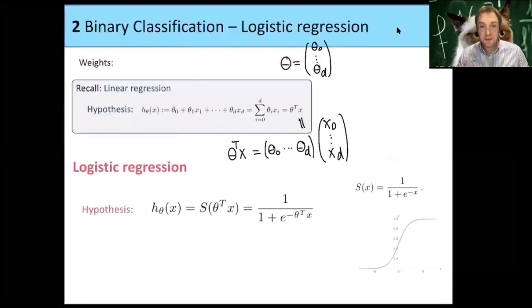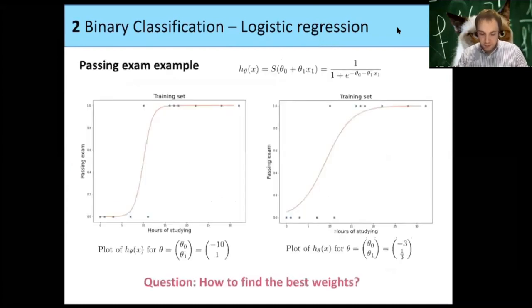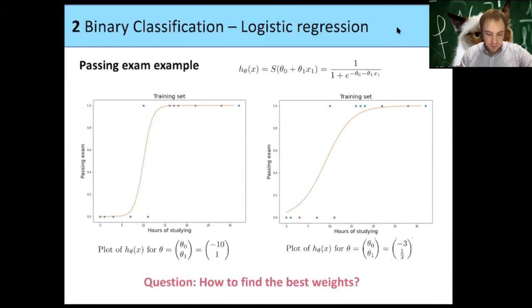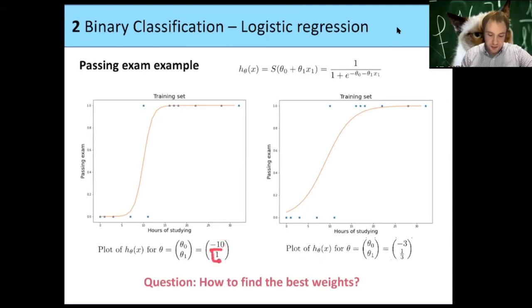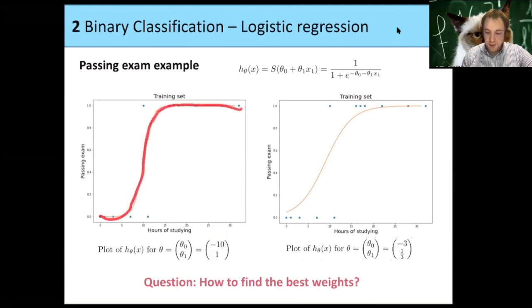The question is, how do we find these weights? For our study example, I show the same training set but with two different thetas. For example, if theta_0 is minus 10 and theta_1 is 1, and you plot this function, it looks like this particular curve.